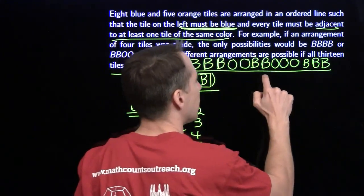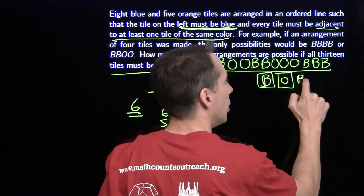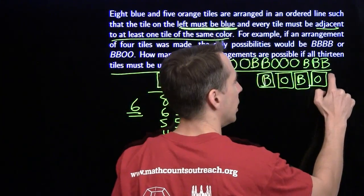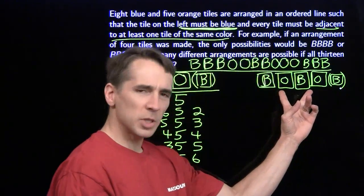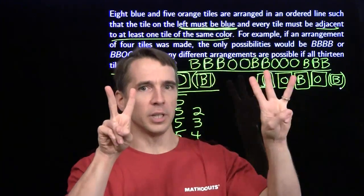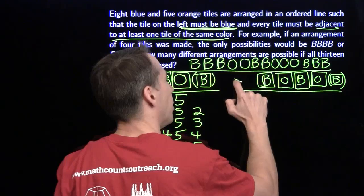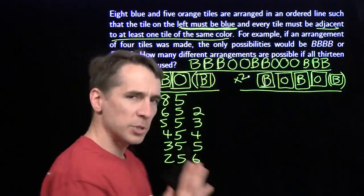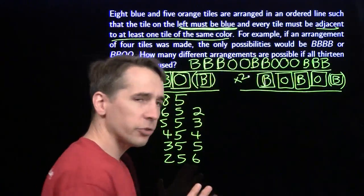Now let's look at the split case: a block of blue, then a block of orange, then another block of blue, then our second block of orange, and possibly a block of blue at the end. These will be split two and three — but they could also be three and two. So when I count these up, I'll multiply by two at the end to account for switching. I'll just count the ones with two first, then double them at the end rather than listing everything twice. We'll try to put as many blues up front as we can.